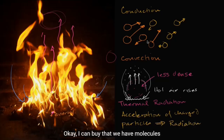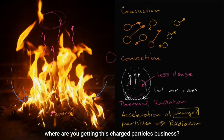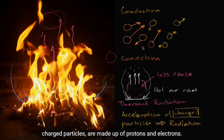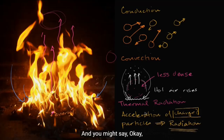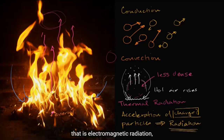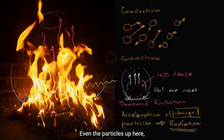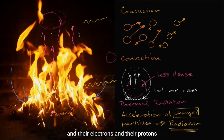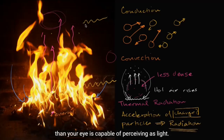You might wonder: where are the charged particles? We have to remember these molecules are made up of atoms, and atoms are made up of charged particles — protons and electrons. The more you accelerate these, the more radiation you release. And you might say, where am I observing radiation in fire? Well, just the very fact that you can see the fire — the light emitted from the fire — that is electromagnetic radiation, in the wavelengths that your eye considers to be visible light. Even the particles higher up that are still quite hot are also emitting electromagnetic radiation because their electrons and protons are getting accelerated, but at a longer wavelength than your eye can perceive as light.